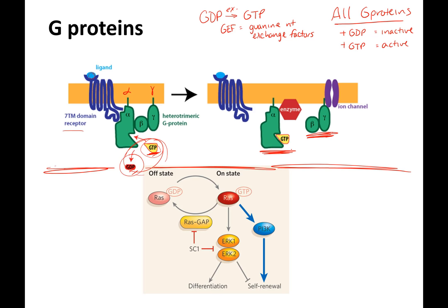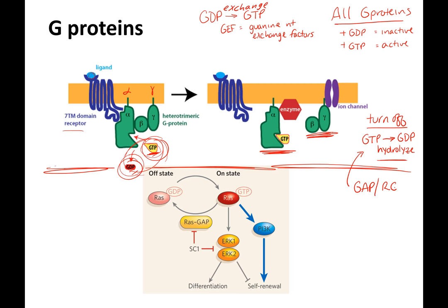The way you turn off a G protein — true for trimeric or monomeric — is you hydrolyze GTP back to GDP. Up here it's an exchange, releasing one and binding another. Here it's a hydrolysis reaction, breaking off one of the phosphates, and this is catalyzed by the GAP or RGS proteins.